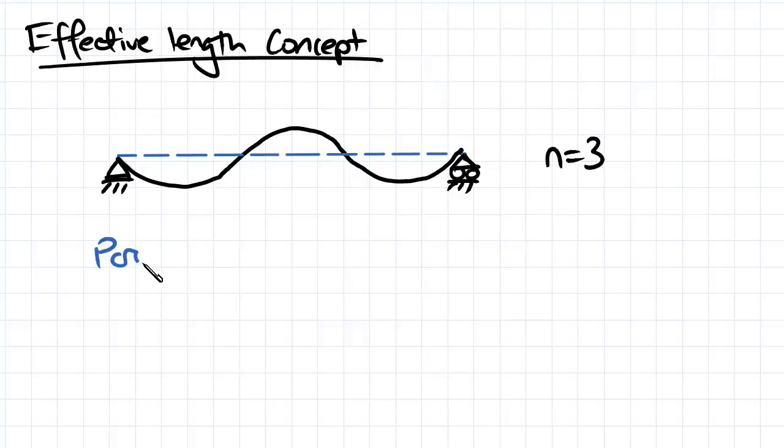So the critical buckling load is defined by this formula here, n squared pi squared EI over L squared. So if we sub that in, we're going to get 9 pi squared EI over L squared.